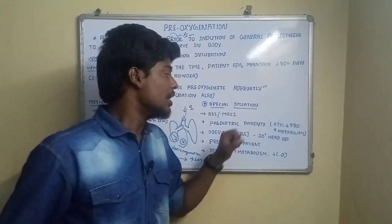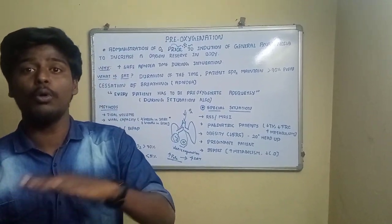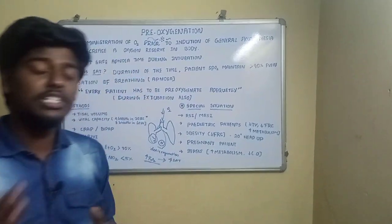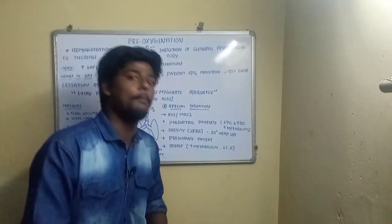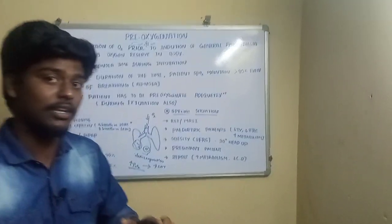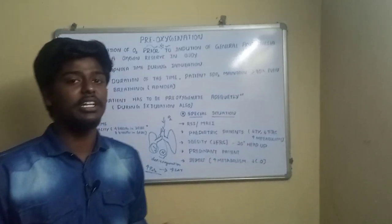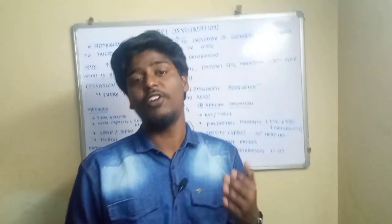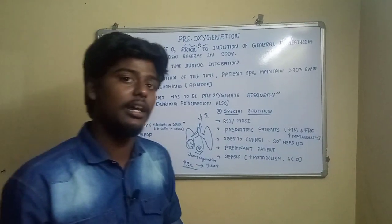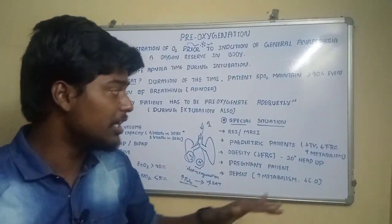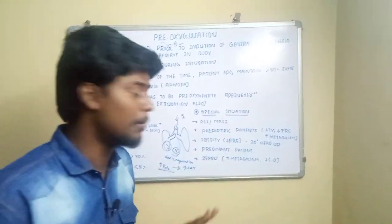Pediatric patients have less tidal volume and lower FRC but a higher metabolic rate, meaning oxygen demand is greatly increased. Adequate pre-oxygenation is essential to prevent hypoxia in these patients. Obese patients have low functional residual capacity (FRC), so pre-oxygenation in a 20-degree head-up position is recommended to increase the oxygen reserve, and must be done correctly and properly.